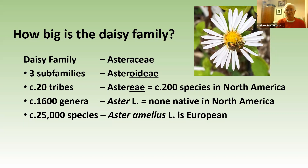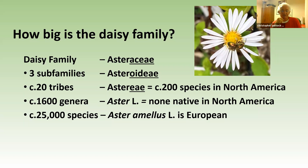The daisy family is divided into three subfamilies: the Lactukoideae, which is the lettuces; the Asteroideae, which is obviously where the asters are; and a group that has no ray florets, like the cudweeds. Within the subfamilies there are 20 tribes. Following asters, this group is called the Astereae, and in America there are about 200 species in the Astereae.